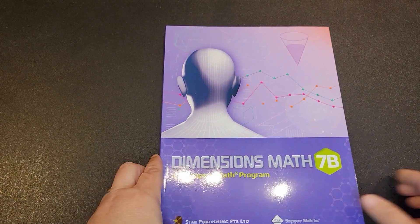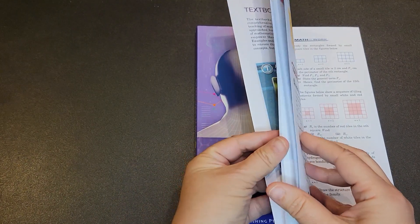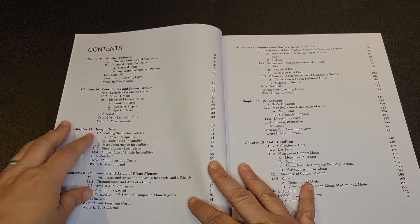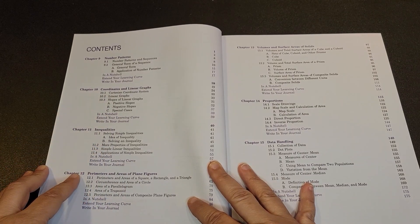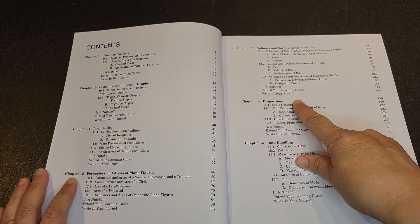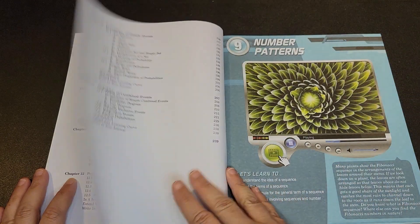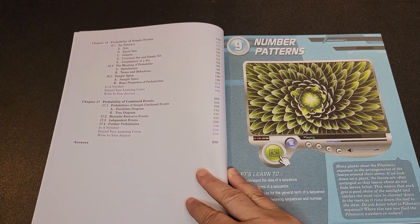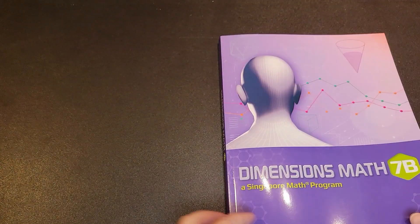Within the B section, you will be focusing on number patterns, coordinates and linear graphs, inequalities, perimeters and areas of plane figures, volume and surface area of solids, proportions, data handling, probability of simple events, and probability of combined events. So that is your scope and sequence.